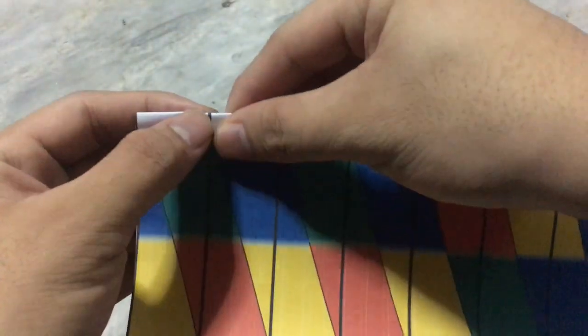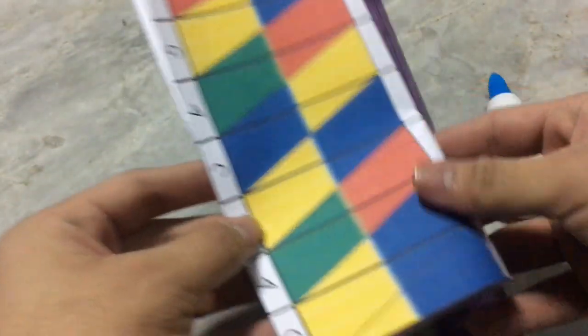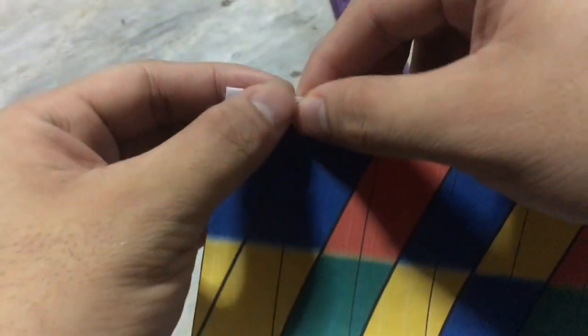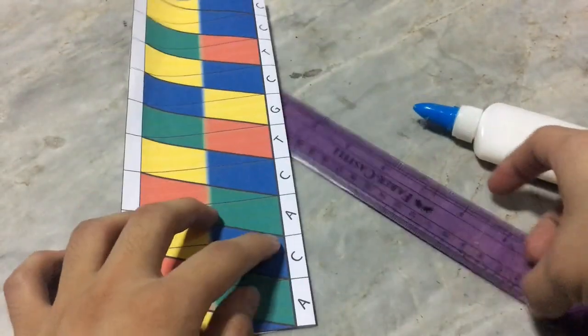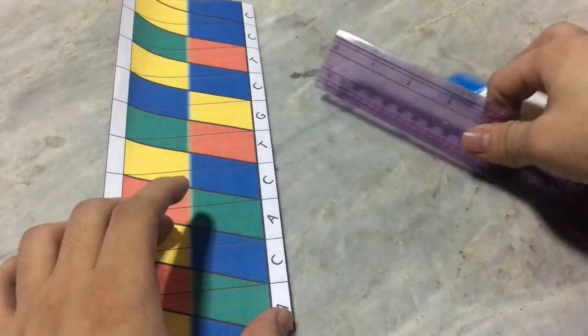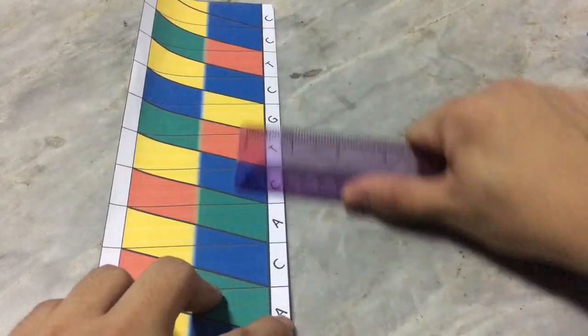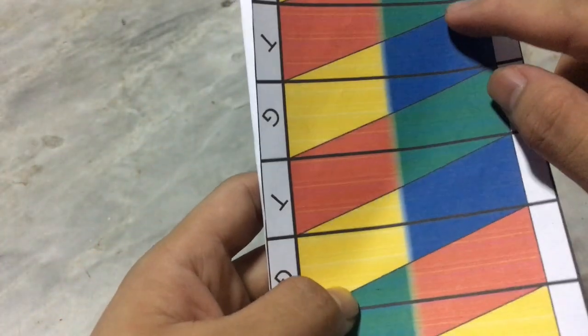Fold the paper in the middle. Just make sure that all sides are equal, and it is better to use a ruler. Then see this line.